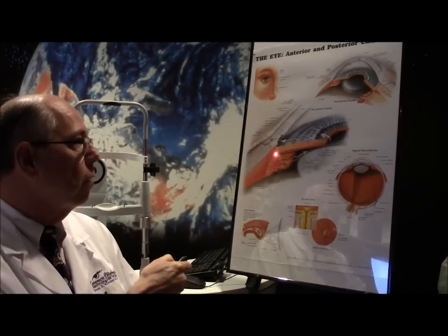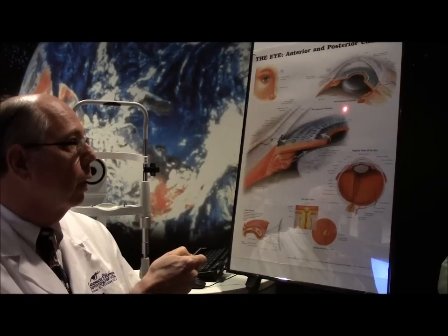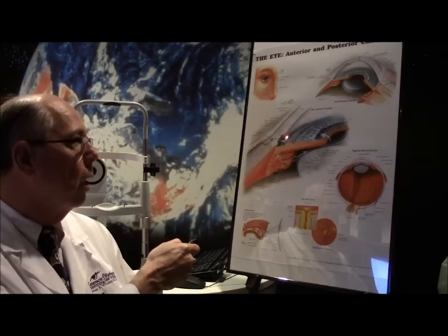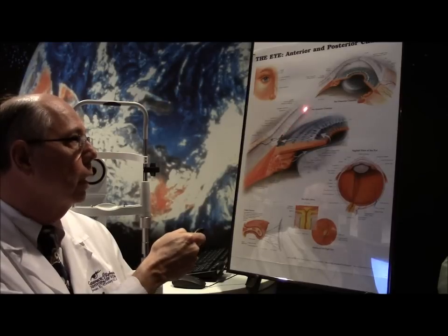So in a small eye, this iris comes more up close to the cornea and across, and that angle is very narrow. So now the fluid has to try to get down to the meshwork and has to travel.